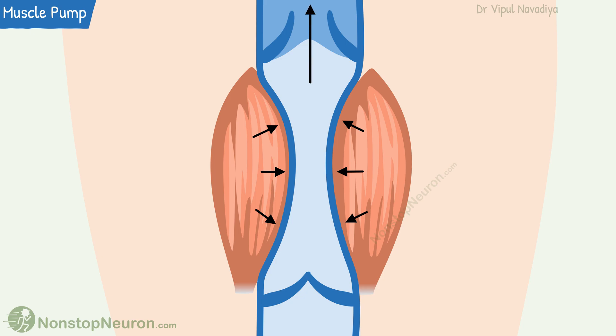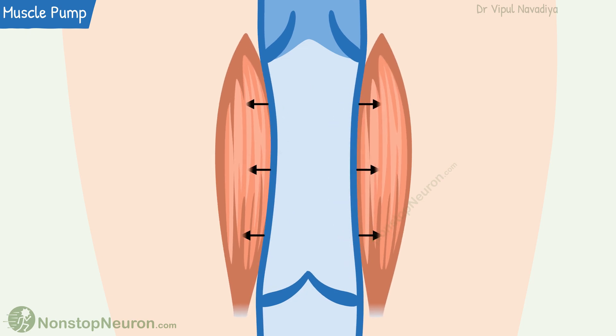The net result is a movement of blood from the middle segment to the upper segment. Now, when the muscles relax, the vein expands, so there is a local fall in the pressure. At this point, the blood from the upper segment tends to flow back, but the closure of the upper valve prevents the back flow.